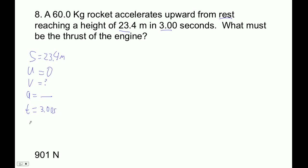I think the thing to use here is S equals UT plus one-half AT squared. So 23.4 equals the initial velocity zero, right? So it's one-half A times three squared.